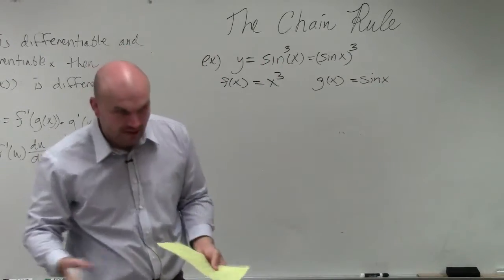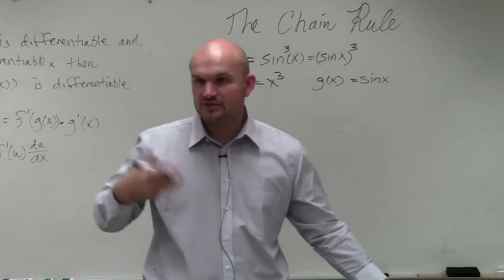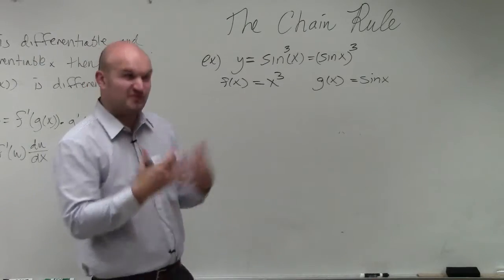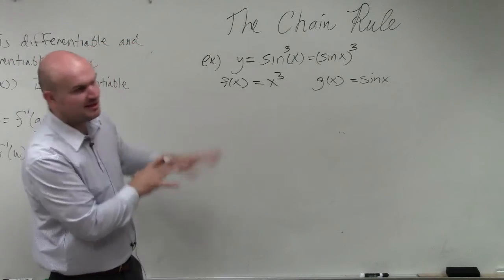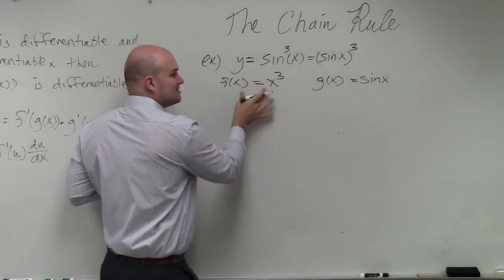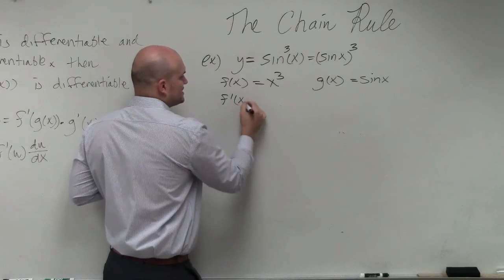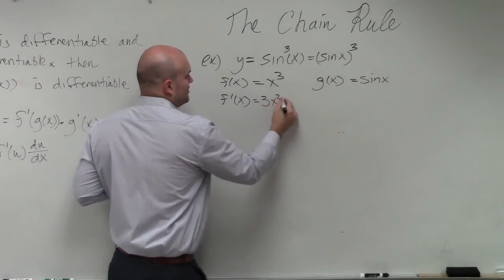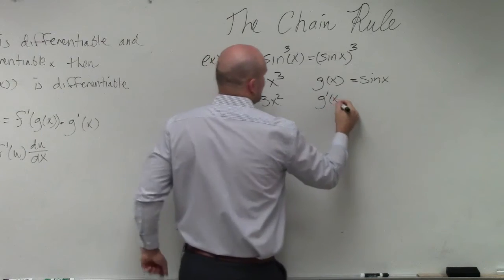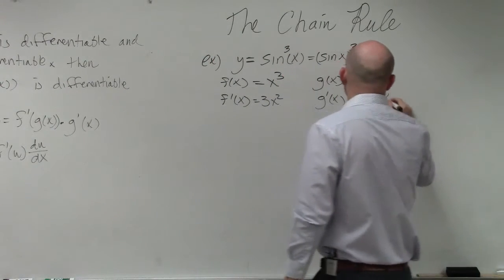And again, I'm going to work through these slowly. I'd recommend doing that until you get used to this or feel comfortable with it. If you feel comfortable, you can skip a lot of these steps. Then I'm just going to take the derivative of each of these: f prime of x equals 3x squared, g prime of x equals cosine of x.